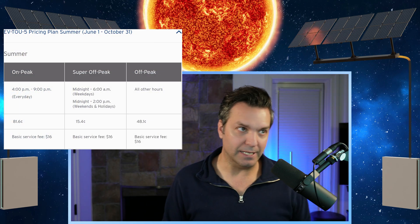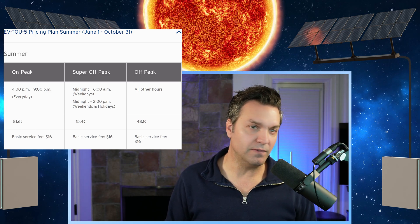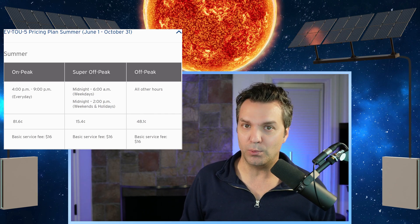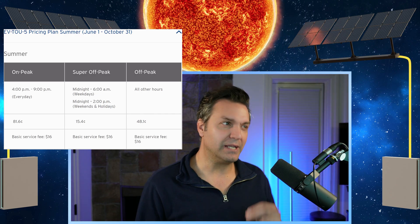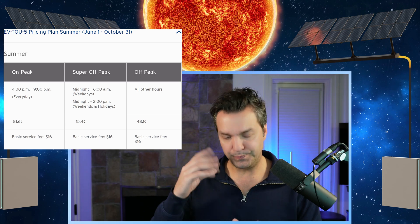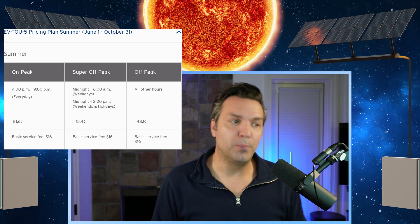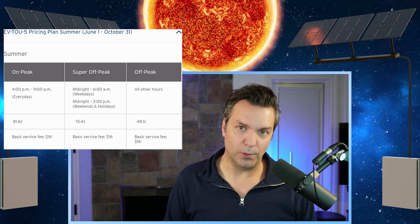The summer is what is heartbreaking. If I did not have solar and I did not have the Powerwalls, the prices of power is just over the moon. Here we can see that super off-peak is around 15 cents, it's at 15.4 cents. Off-peak, it jumps up to 48.1 cents. But the peak, starting at 4 p.m. to 9 p.m., that's the peak time when a lot of people are using power, 81.6 cents per kilowatt hour.